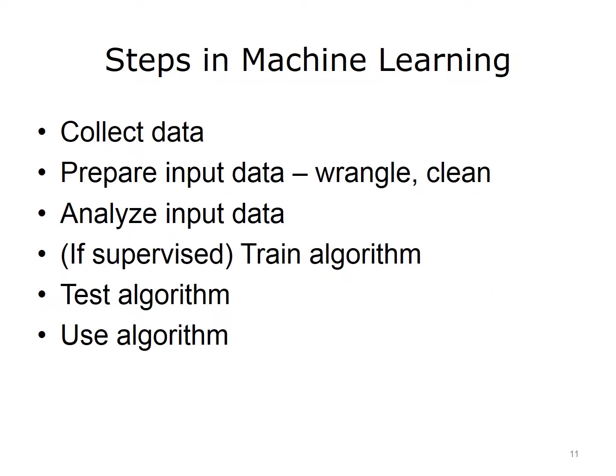The steps in using machine learning begin by collecting the data we want to use. We then prepare the input data in a way that it can be used by machine learning algorithms — this is sometimes called data wrangling, where we transform data into formats suitable for machine learning. We also may need to clean the data, since the source may contain other types of data. Next, we analyze the input data. If we're using supervised methods, we train the algorithm, then test it with test data different from the training data to determine if the algorithm is generalizable and not overfitted. Finally, we make use of the algorithm for the task for which we are planning to use it.